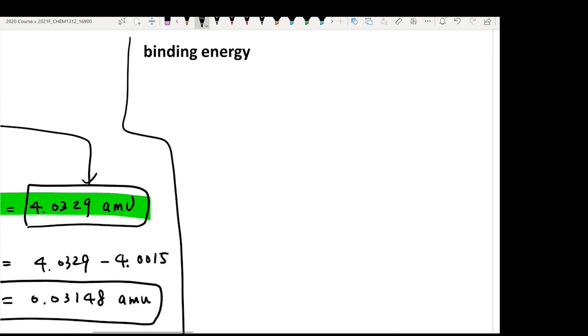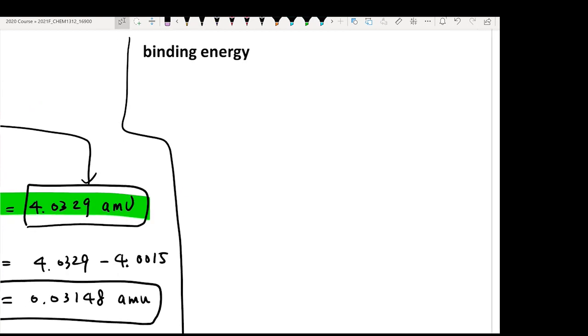The equation that combines these two things together is the most famous equation. This connects the mass defect to the energy. E equals mc squared. You can write delta E equals delta m times c squared. Delta m is the mass defect that you just calculated. C is the speed of light.